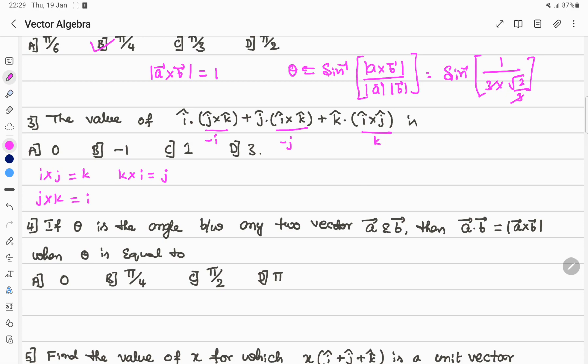When we replace and expand, we get negative i dot i plus negative j dot j plus k dot k.